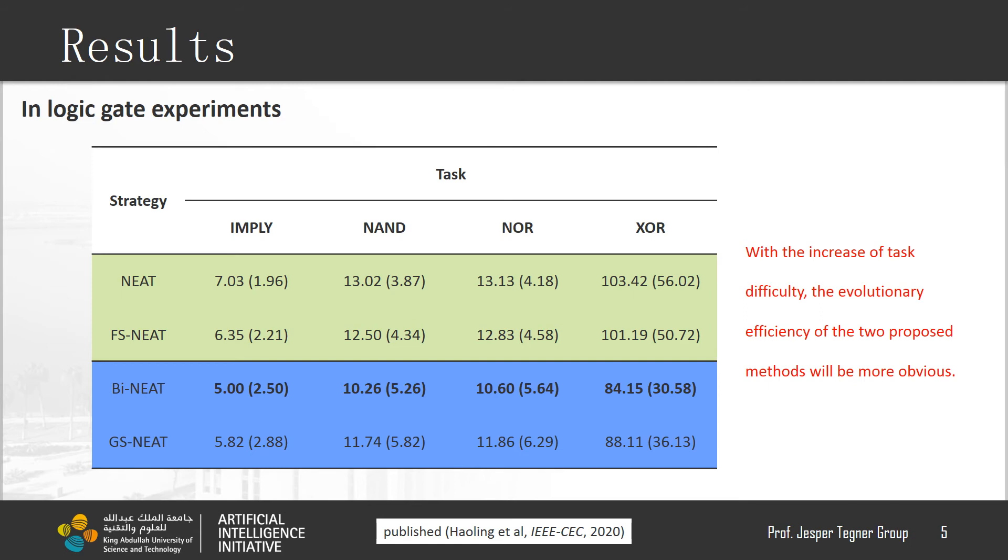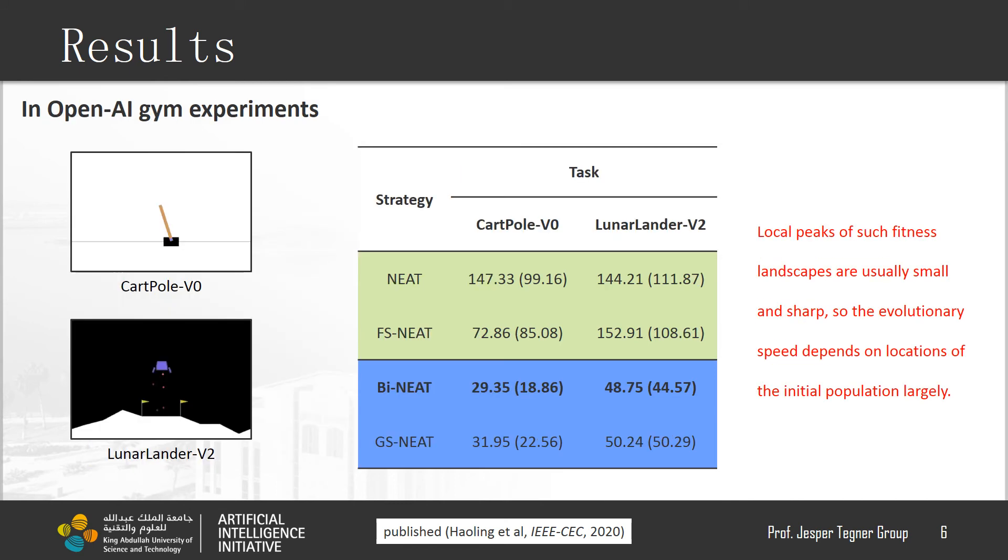In logic gate environments, with the increase of task complexity, the performance of our proposed strategy will be better and better. The results in reinforcement learning experiments also show that Bi-NEAT and GS-NEAT find the best network faster than others.